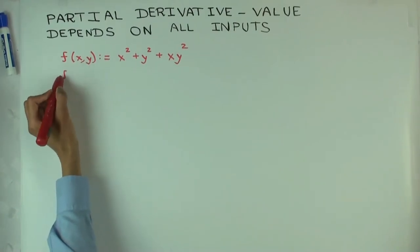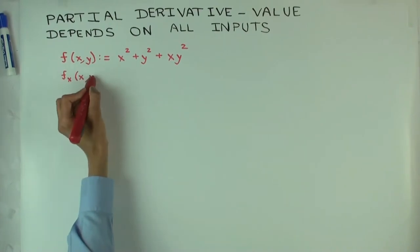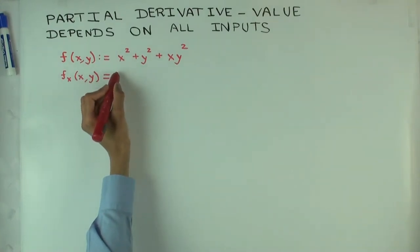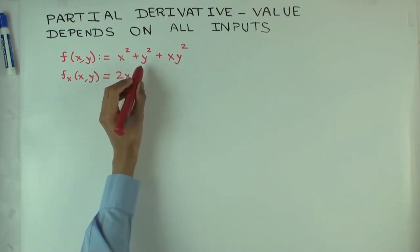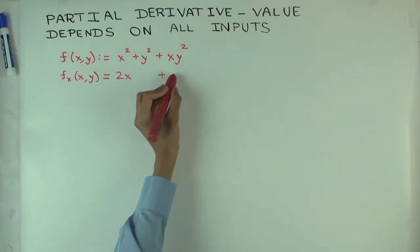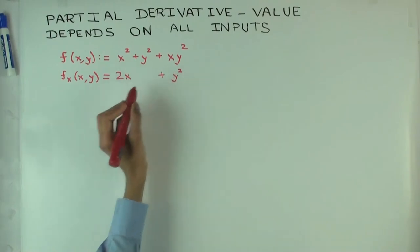What is f sub x of (x, y)? We are differentiating with respect to x holding y constant. So x squared differentiates to 2x. What does y squared differentiate to? Zero, because you differentiate with respect to x holding y constant. This is a constant. Plus, this becomes y squared.